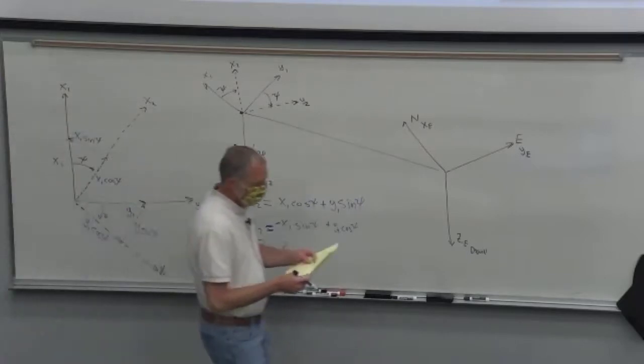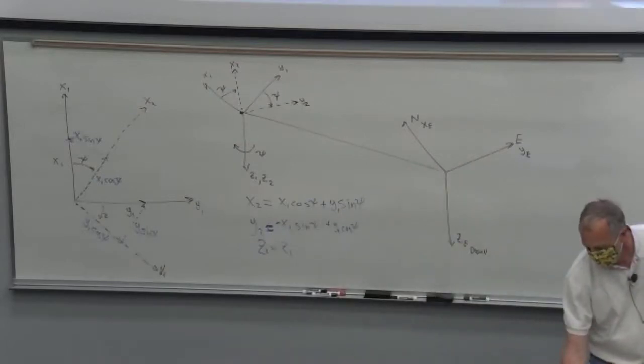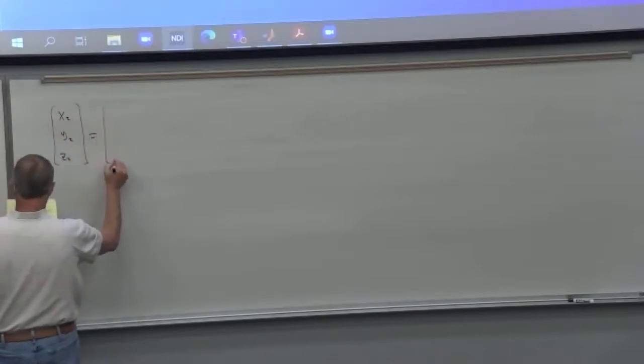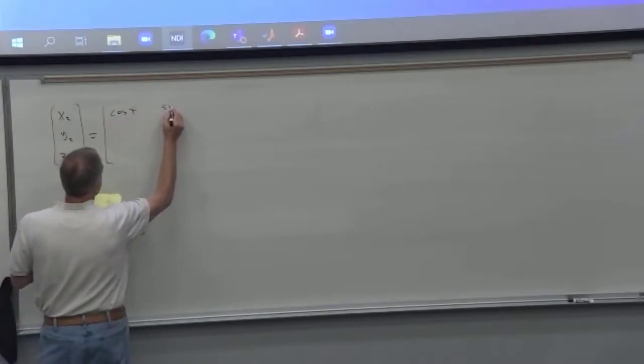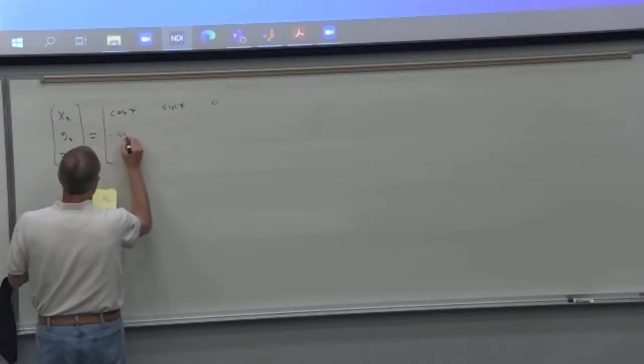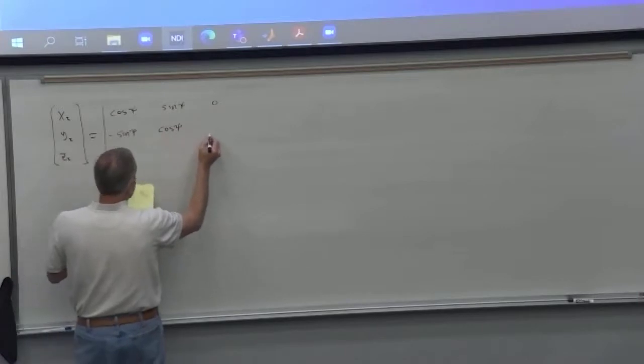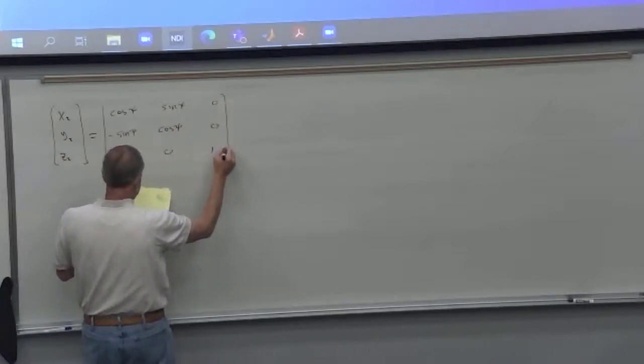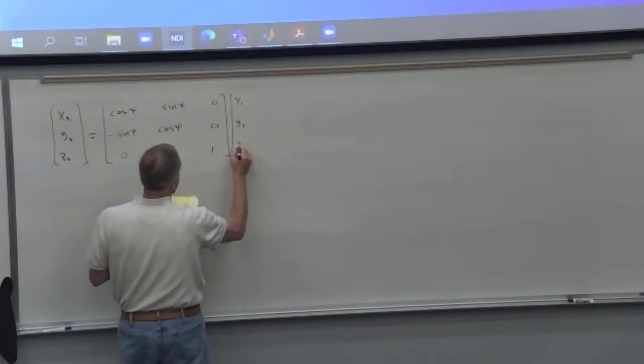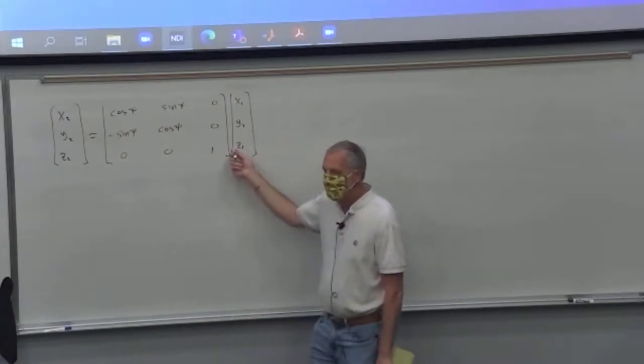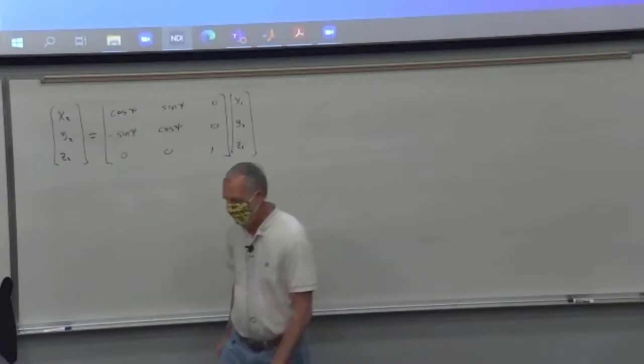We get what's called the transformation matrix. We write those equations in a matrix form. That tells us if you have a vector in the one coordinate system, this is your vector in the two coordinate system. And that's what we want to know. If we have gravity over here in the one coordinate system and we know it's acting toward the center of the earth, which way does it act in the next coordinate system?